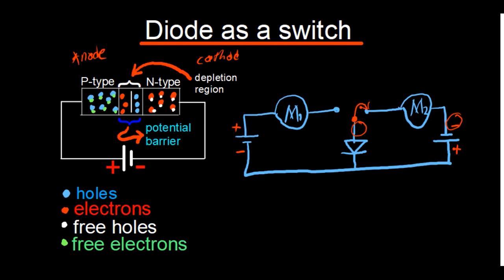When you connect the positive part — say the red wire of the motor — to the positive terminal of the cell and the negative wire to the negative side, it's going to rotate in a certain direction. If you swap them — putting the red on the negative and the black on the positive — it will still work, but it will rotate in a different direction, giving you a clockwise and an anticlockwise rotation.